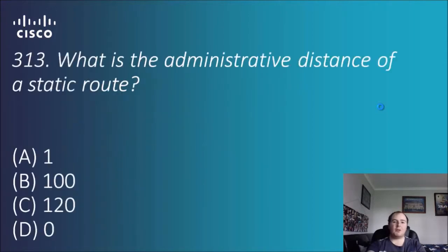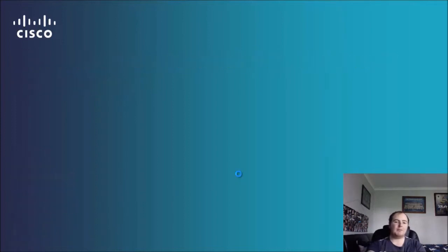Question 313: what is the administrative distance of a static route? The options are 1, 100, 120, or 0. Going by logic — RIP is 120, a connected route is 0 — the static route is administratively configured, so it will be 1.